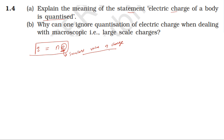Now for the second part: why can one ignore quantization of electric charge when dealing with macroscopic large-scale charges? Even a very small charge in everyday situations contains a very large number of electrons. The charge q is equal to n times e, where n can be very large.